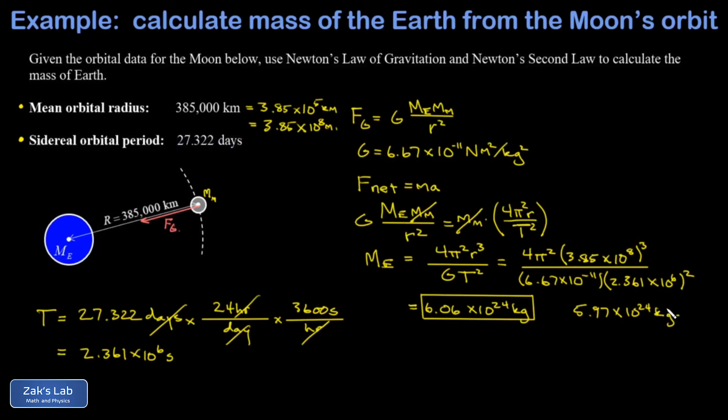It might be nice to compute the percent error, and I can ignore the 10²⁴ in this because it appears in the numerator and the denominator. I just have 6.06 minus 5.97, and I'll divide by the accepted value of 5.97 and multiply by 100. And this turns out to be about a 1.5% error, which is actually pretty good for how simple we modeled the orbit of the Moon.